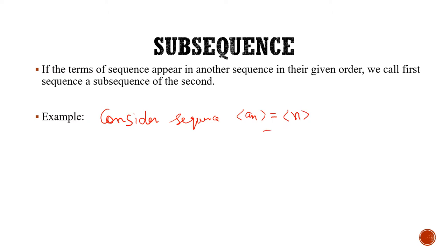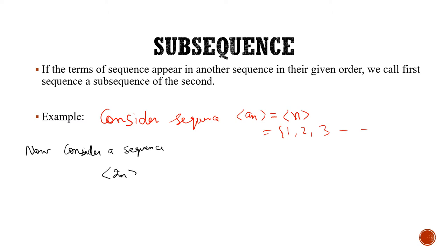Consider a sequence a_n equal to n, which gives us the sequence 1, 2, 3, and so on. Now if I consider a sequence 2n, this will be equal to 2, 4, 6, and so on — that is the sequence of even numbers.